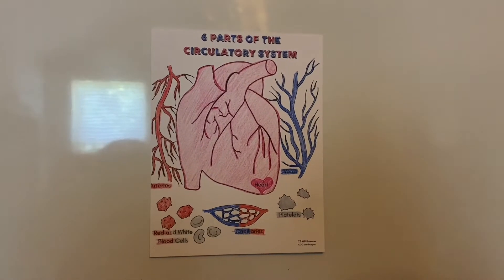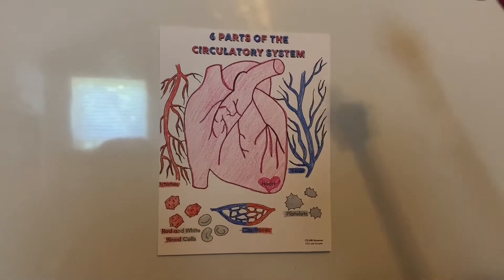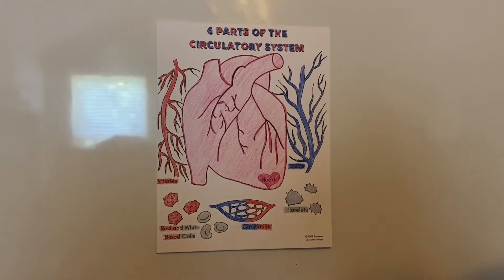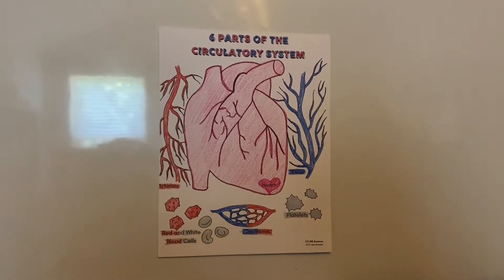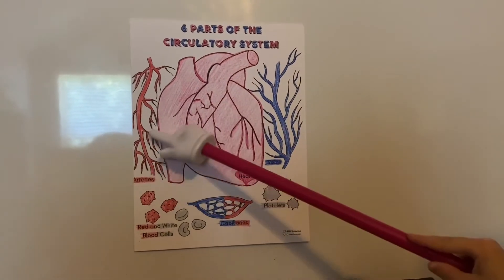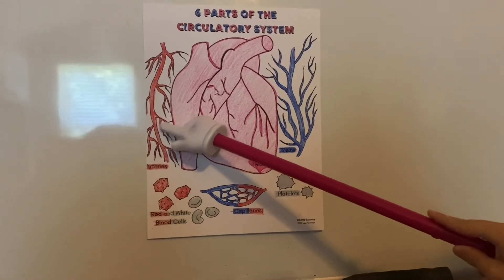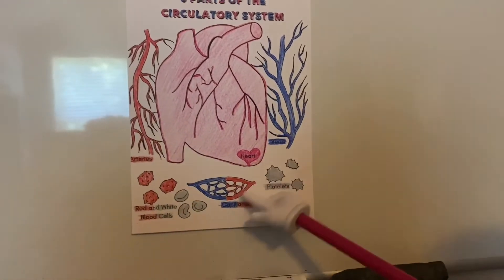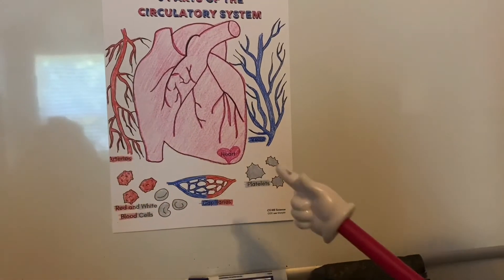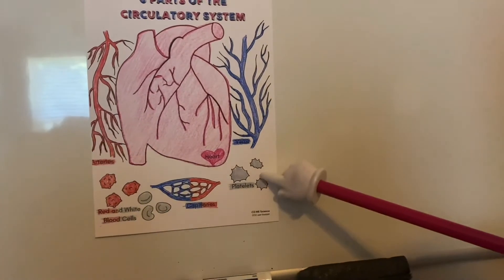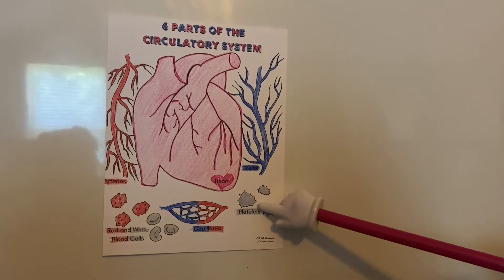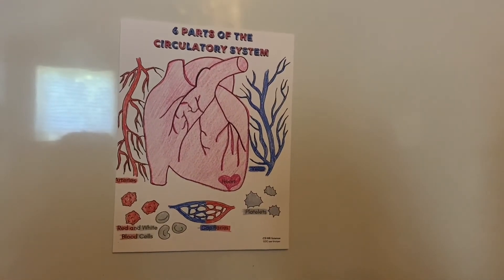What are six parts of the circulatory system? Six parts of the circulatory system: heart and arteries, veins, capillaries, red and white blood cells, and platelets. Good job, girls!